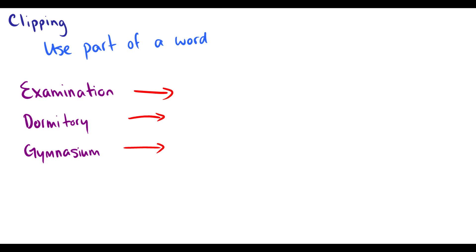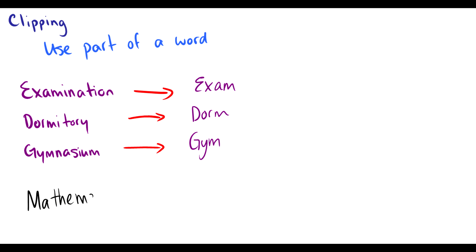Clipping is when we use part of a word. So we have words like examination, but we never say that in English because it's a little long unless we're being formal — so we shorten it to exam. Dormitory — now we just say dorm. Gymnasium — we say gym. There's a very common example that differs between the UK and North America, and that is the word mathematics.